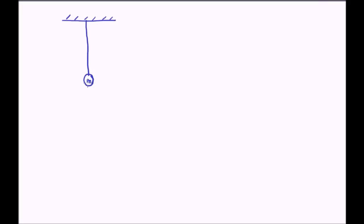So how does a simple pendulum work? We displace the bob to one side, bring the mass over here, and then release it. When we release it, the bob follows this trajectory, passes through the center, rises up, reaches an extreme point on the other side, and then comes back again — passing through the center and returning here. This oscillation about the mean position keeps repeating. If there is no friction, this oscillation will continue for an infinitely long time.